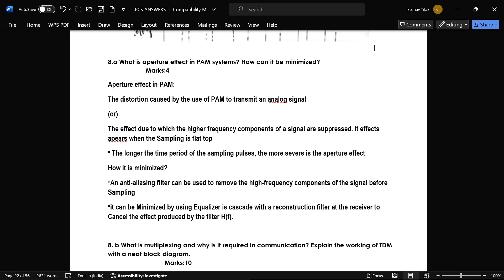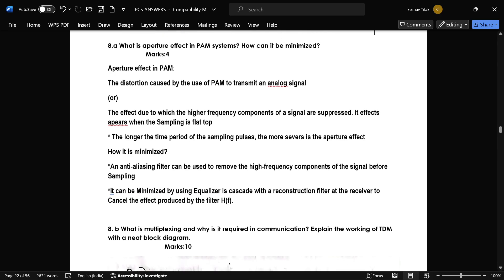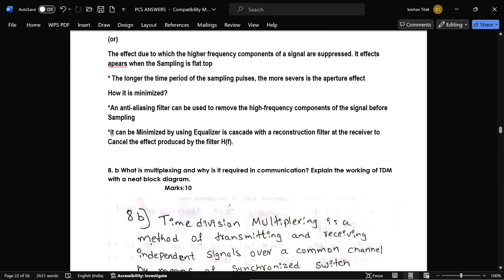So aperture effect in PAM is distortion caused by the use of PAM to transmit an analog signal and it is minimized by anti-aliasing filter can be used to remove the high frequency component of signal before sampling.